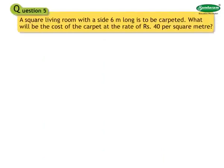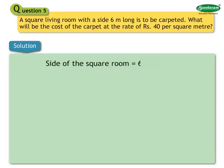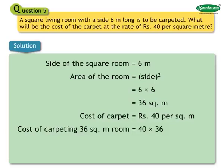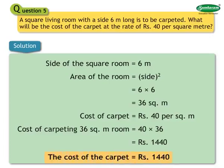Number 5: A square living room with a side 6 meters long is to be carpeted. What will be the cost of carpet at the rate of Rs. 40 per square meter? Solution: Area of room equals 6 into 6 equals 36 square meters. Cost of carpeting equals 40 into 36 equals Rs. 1,440. The cost of the carpet is Rs. 1,440.